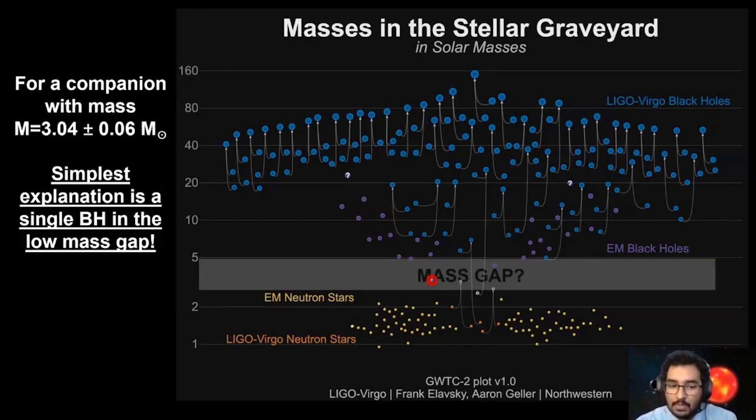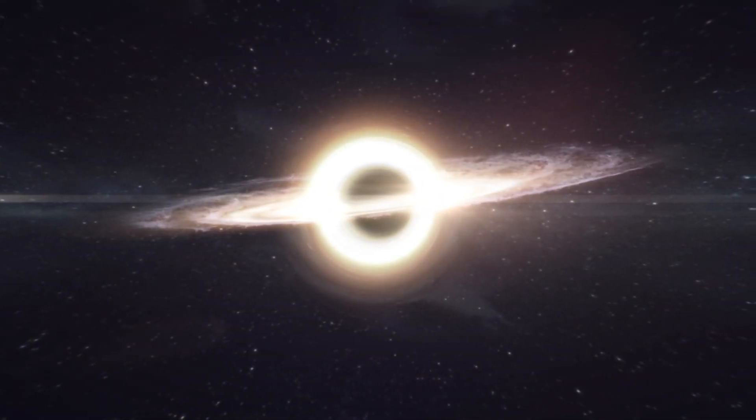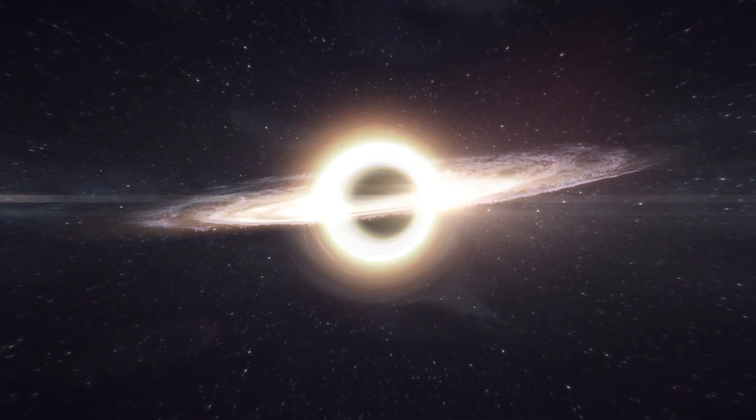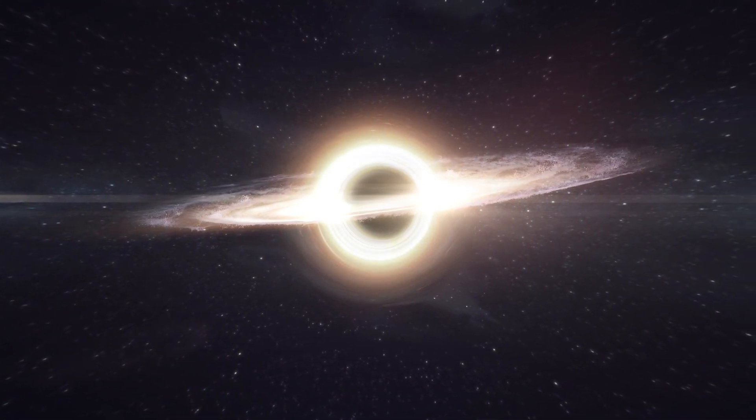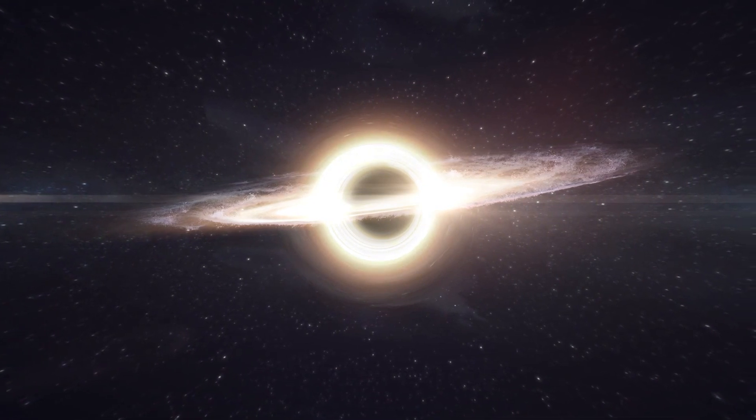So there's a gap between neutron stars and black holes, and we haven't found a lot of black holes in the mass gap yet, but we are finding them more and more now.